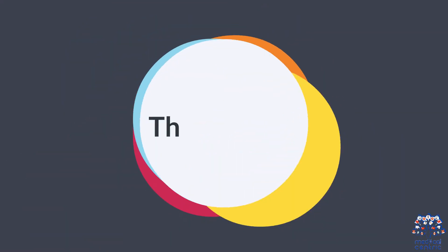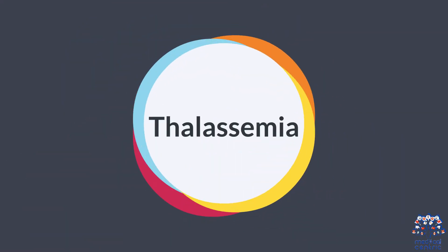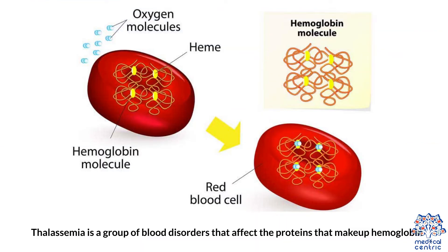Type 6: Thalassemia. Thalassemia is a group of blood disorders that affect the proteins that make up hemoglobin.